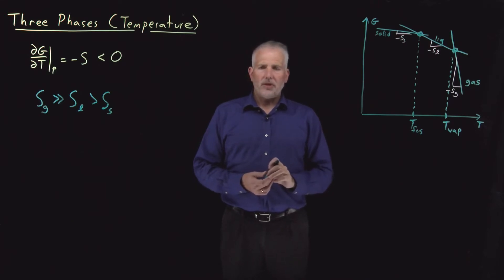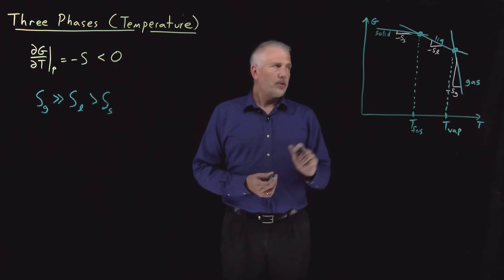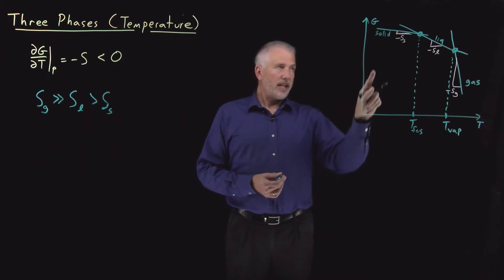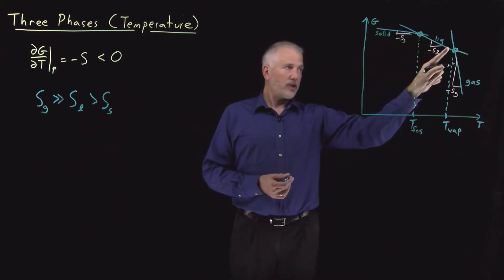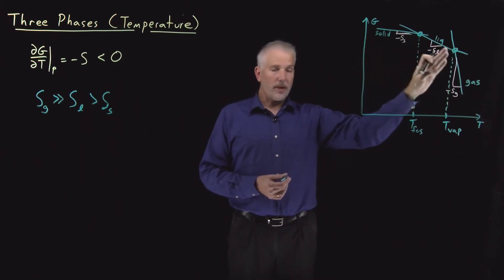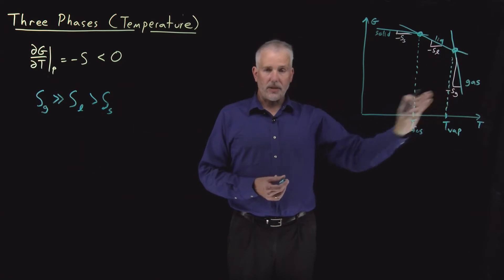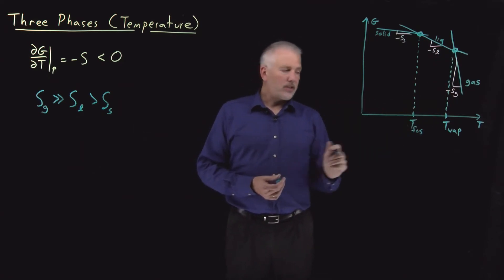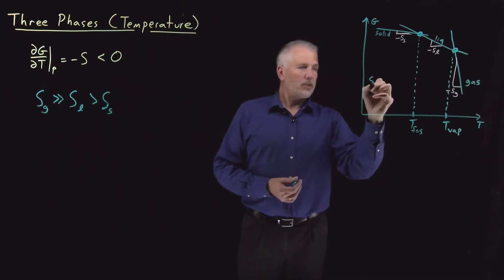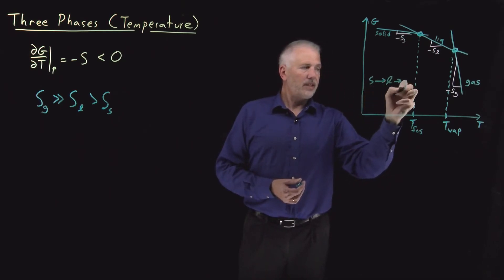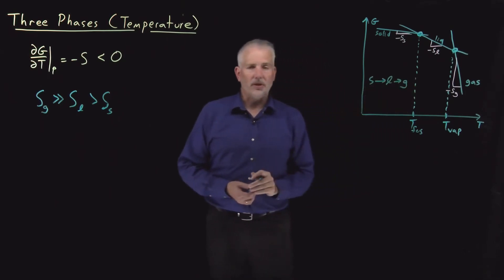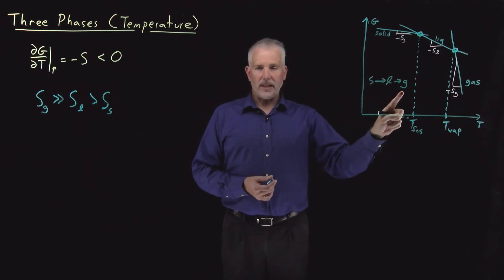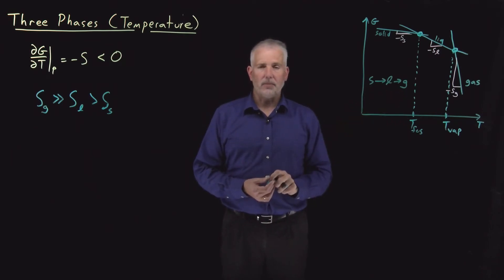That raises a question, though. The way I've drawn this diagram, as I take a substance and heat it, the solid will become liquid, and eventually the liquid will become gas — the substance melts and then boils. That doesn't tell us anything about sublimation. In this diagram, solid becomes liquid, becomes gas as I raise the temperature. That doesn't help us understand the phase transition of solid turning directly to gas — the process of sublimation.